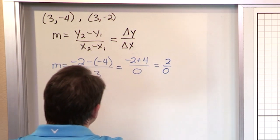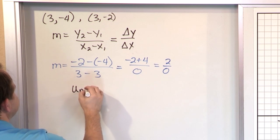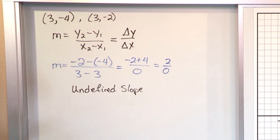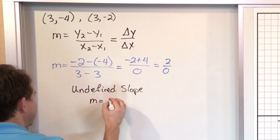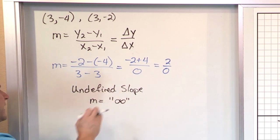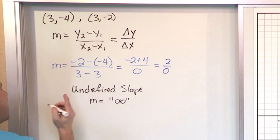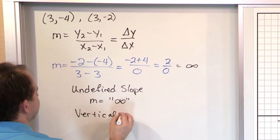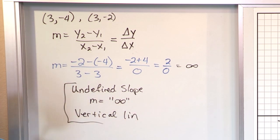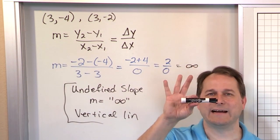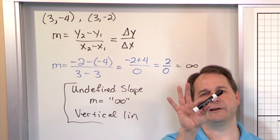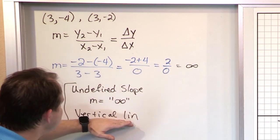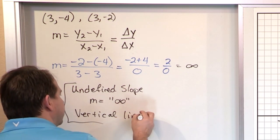On your test, your teacher will probably want you to say it has an undefined slope. But in later classes like calculus, you consider the slope to be, in quotes, infinity — meaning it's infinitely big but not a real number, so we still say undefined. You should also know that when you have an infinite slope like this, it really means you have a vertical line.